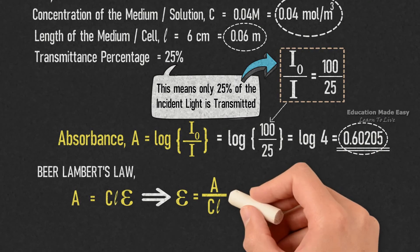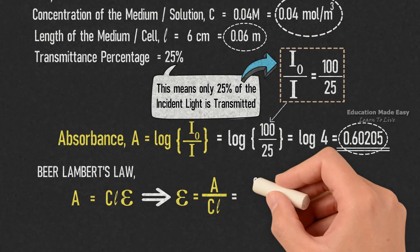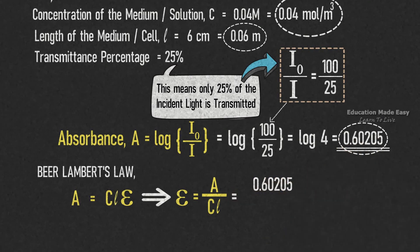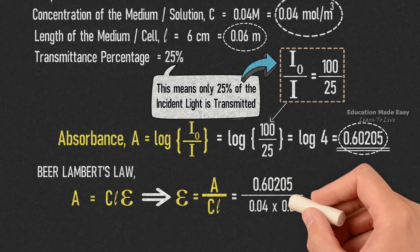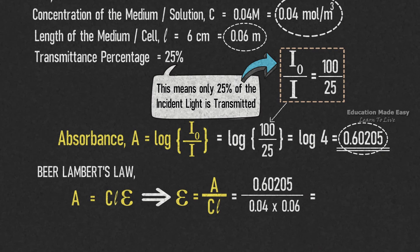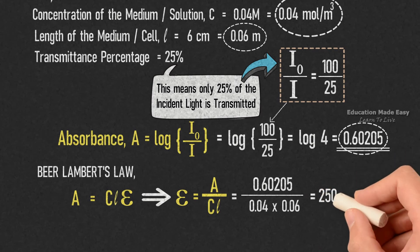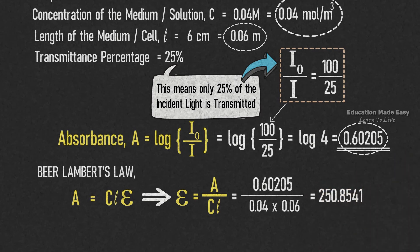So, A divided by CL is equal to 0.60205 divided by 0.04 into 0.06 which is equal to 250.8541 mol raised to minus 1 meter square.